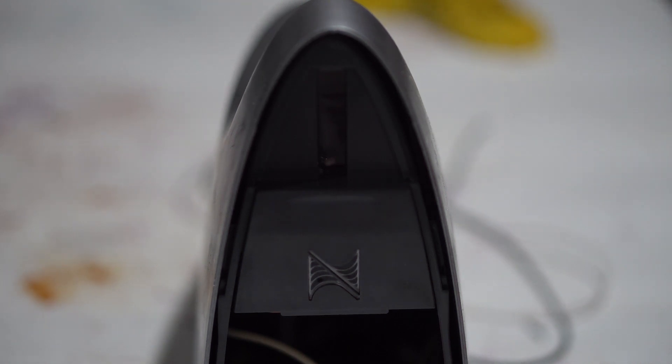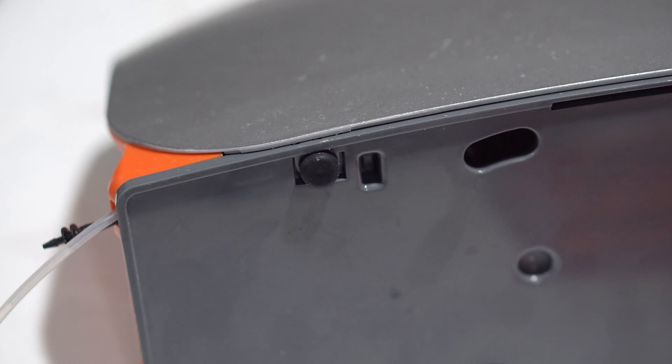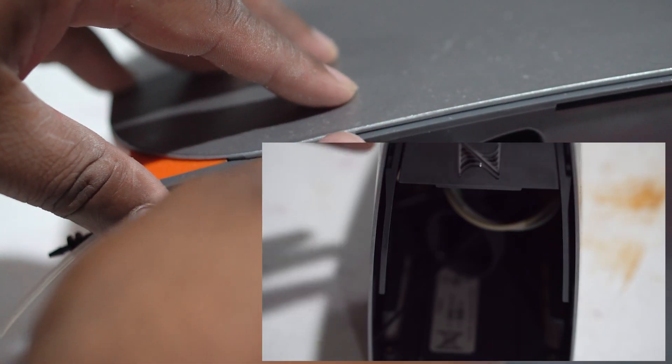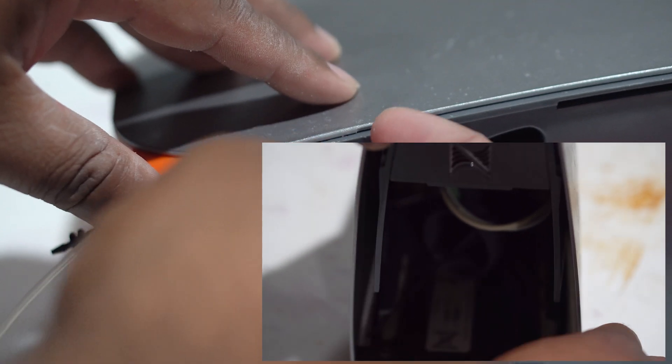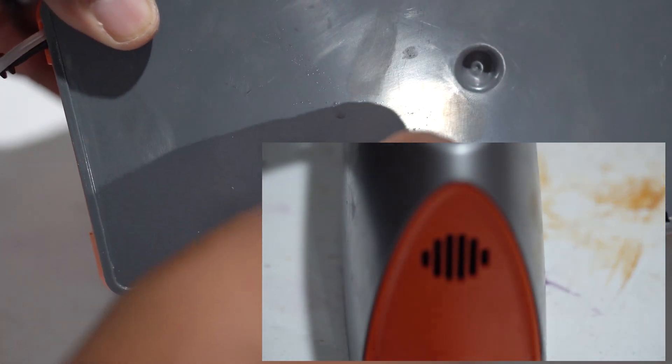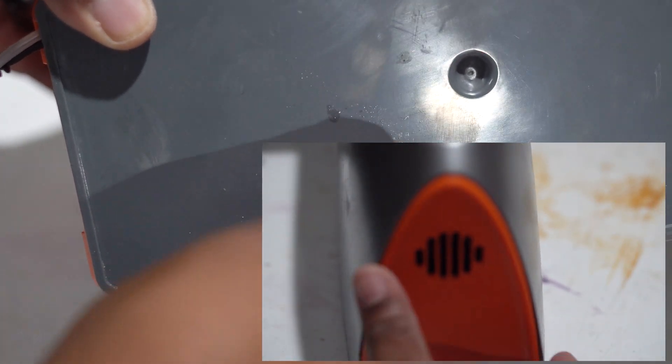Next you're going to want to remove the four black legs on the bottom of the Trident unit. They turn counterclockwise. What they do is that they hold the outer shell onto the frame of the Trident. So you're going to want to pull the sides slightly away from the Trident in order to clear those guide holes. You'll see what I'm talking about after you've removed those little legs.